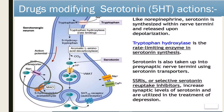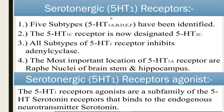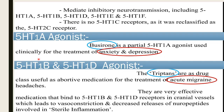5-HT1 receptors are subdivided into 5-HT1A, B, D, E, and F. 5-HT1C has been reclassified into 5-HT2C. All subtypes of the 5-HT1 receptor inhibit adenylyl cyclase and are G-protein coupled receptors. The most important location of 5-HT1A is at the raphe nucleus of the brainstem and hippocampus. Serotonin receptors bind with serotonin, the endogenous neurotransmitter. Buspirone is a partial 5-HT1A agonist used clinically for the treatment of anxiety and depression.